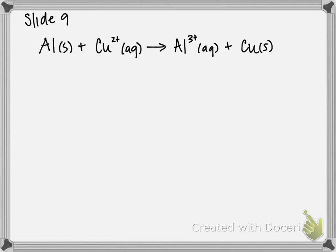The redox reaction we want to balance in this problem is: aluminum solid plus Cu²⁺ gives you Al³⁺ plus copper solid.